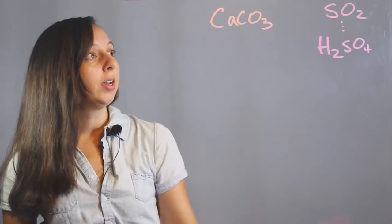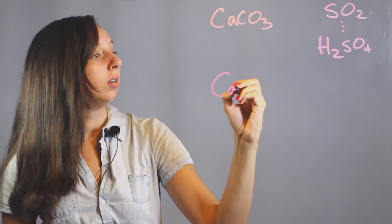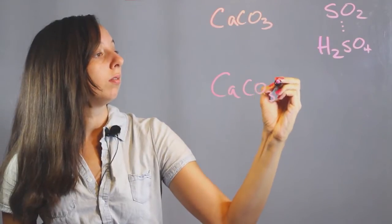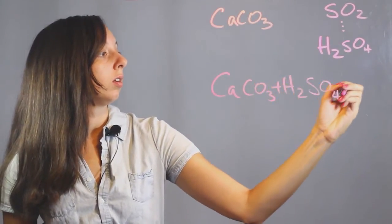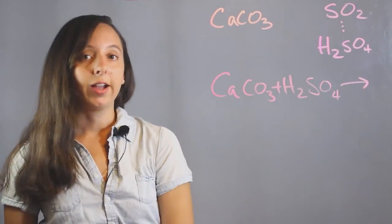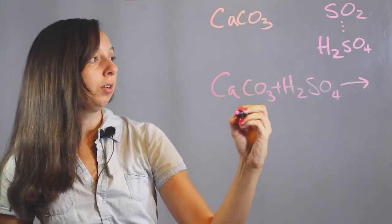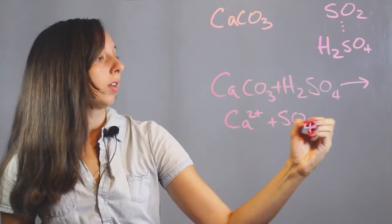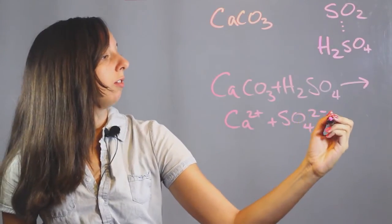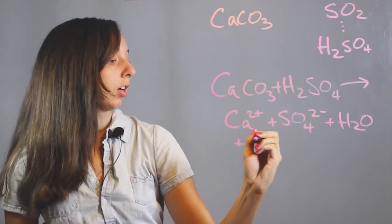When we combine calcium carbonate and sulfuric acid, they react and create ions. The ions we make from this reaction are calcium 2+, sulfates, water, and carbon dioxide.